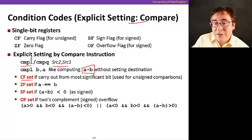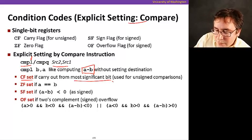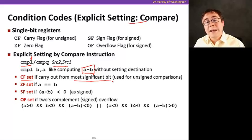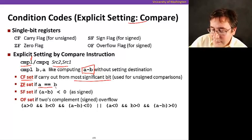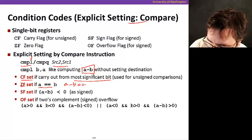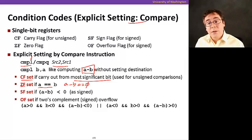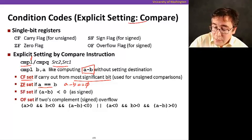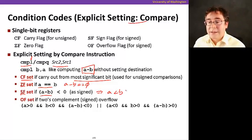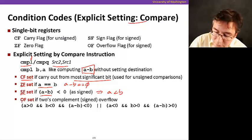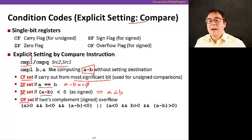The CF is set if the carryout from the most significant bit is set, used for unsigned comparisons. The ZF is set if A equals B, because if A minus B equals zero, it means A equals B. This is useful for equality comparison. If A minus B is negative, we set the sign flag SF, which means A is less than B. The overflow OF is set if there's a two's complement sign overflow.